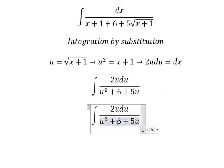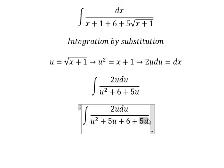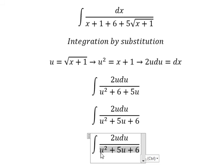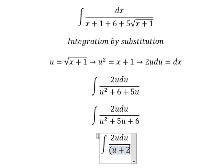So we put 5u in here. Now we need to do factorization. That should be u plus 2 times u plus 3.